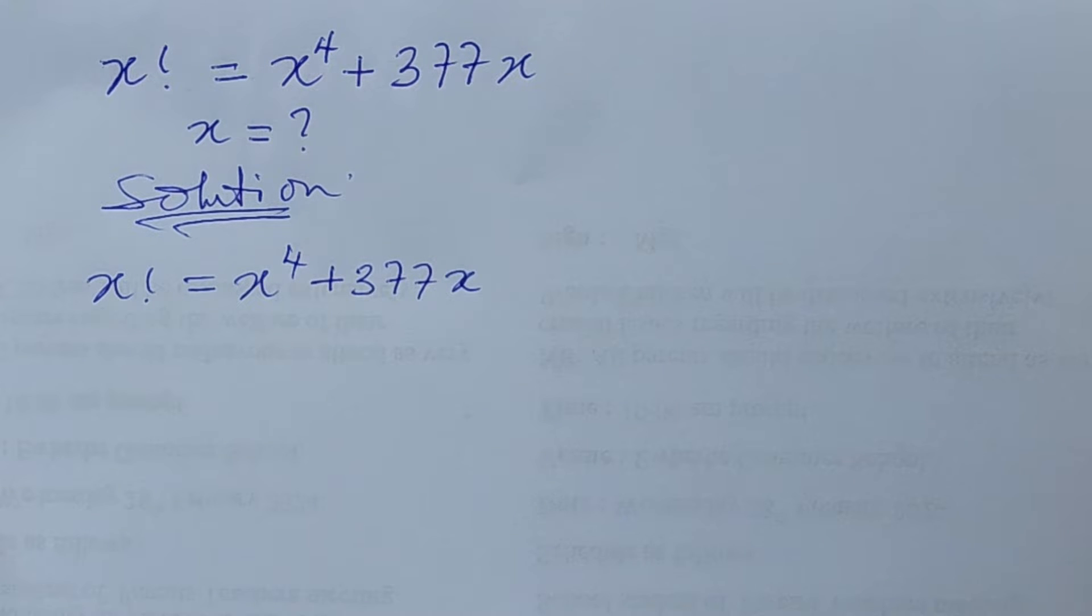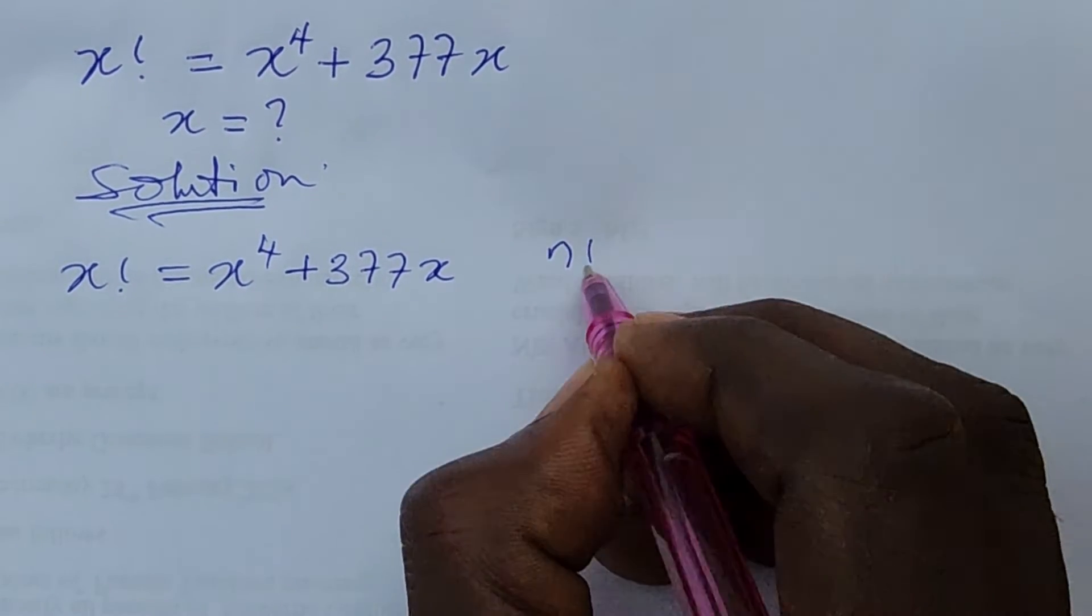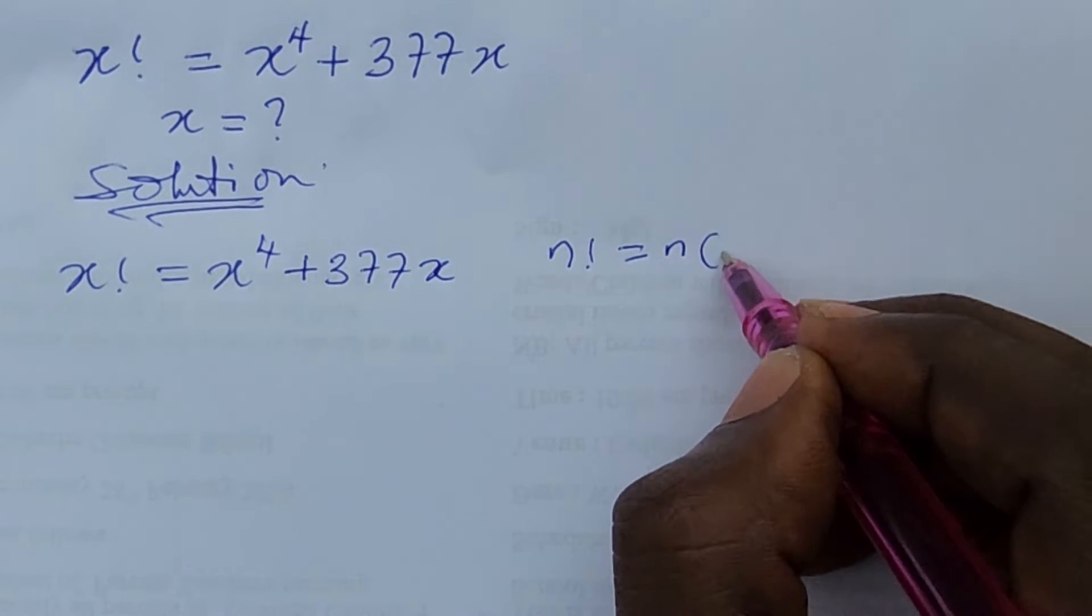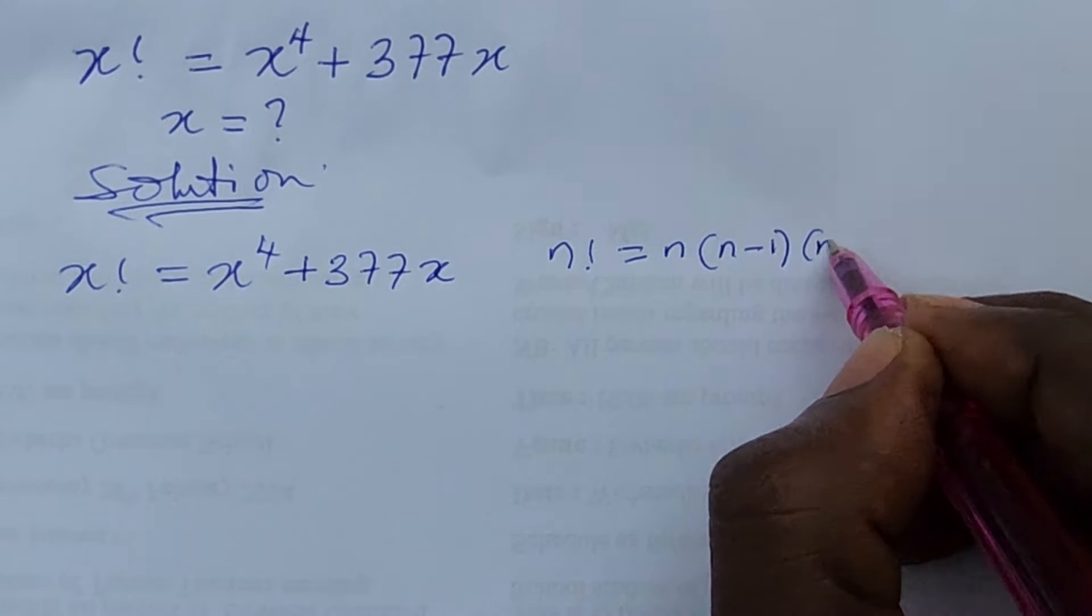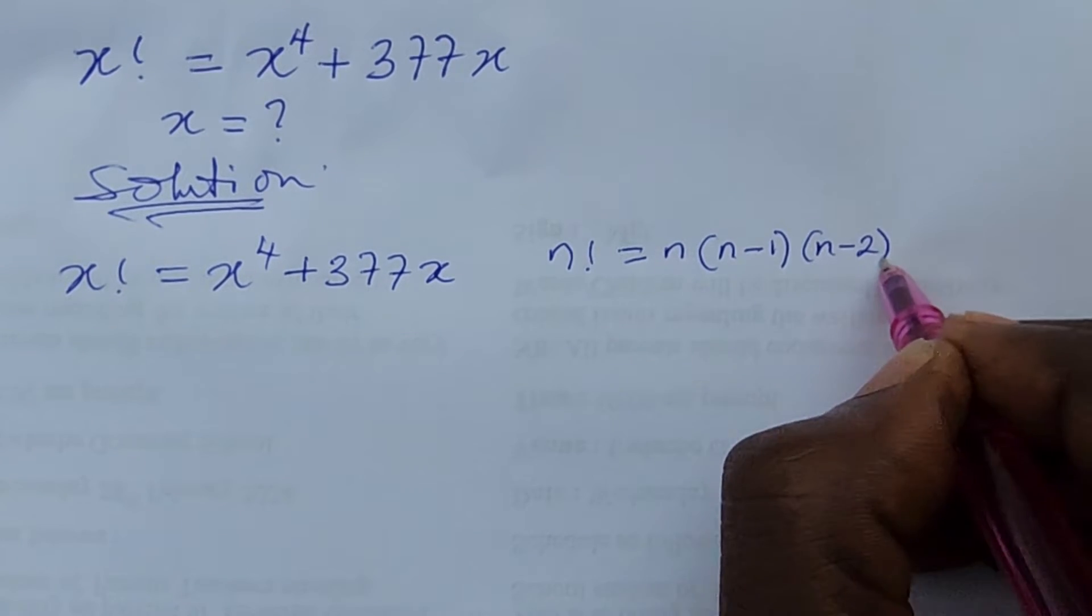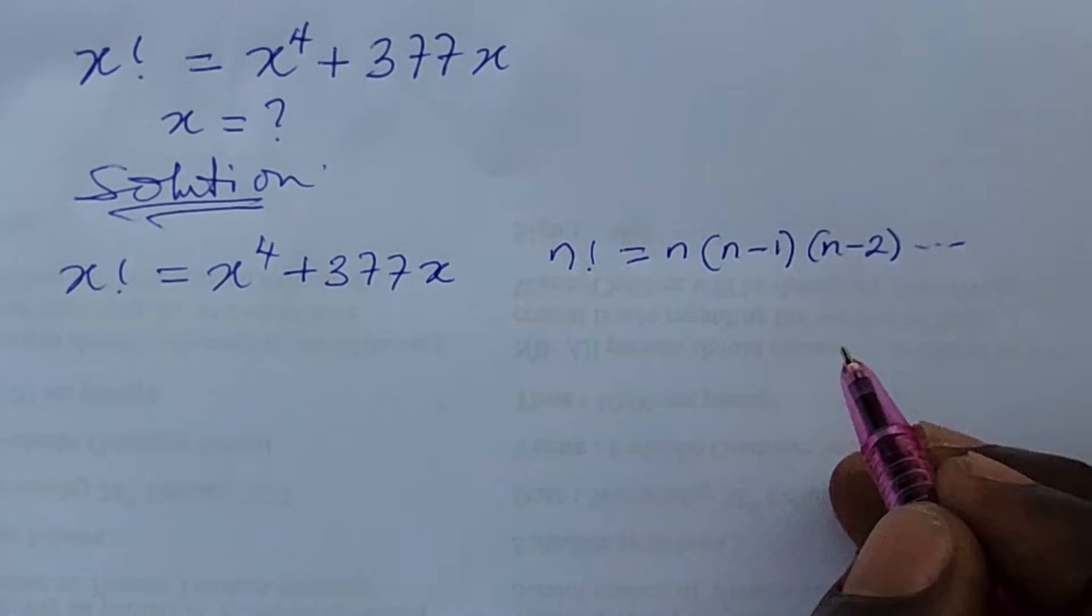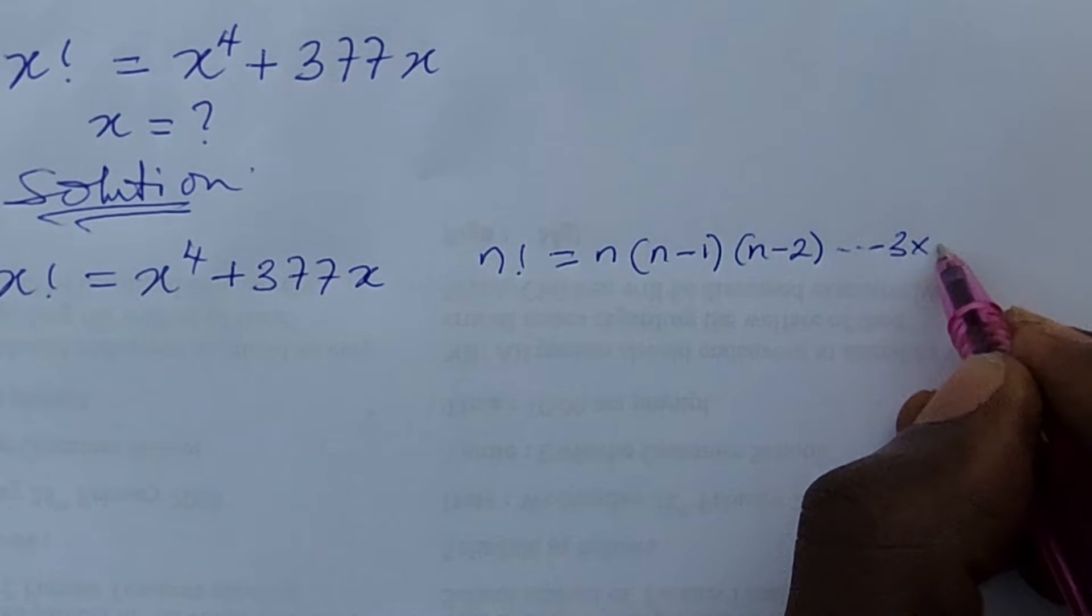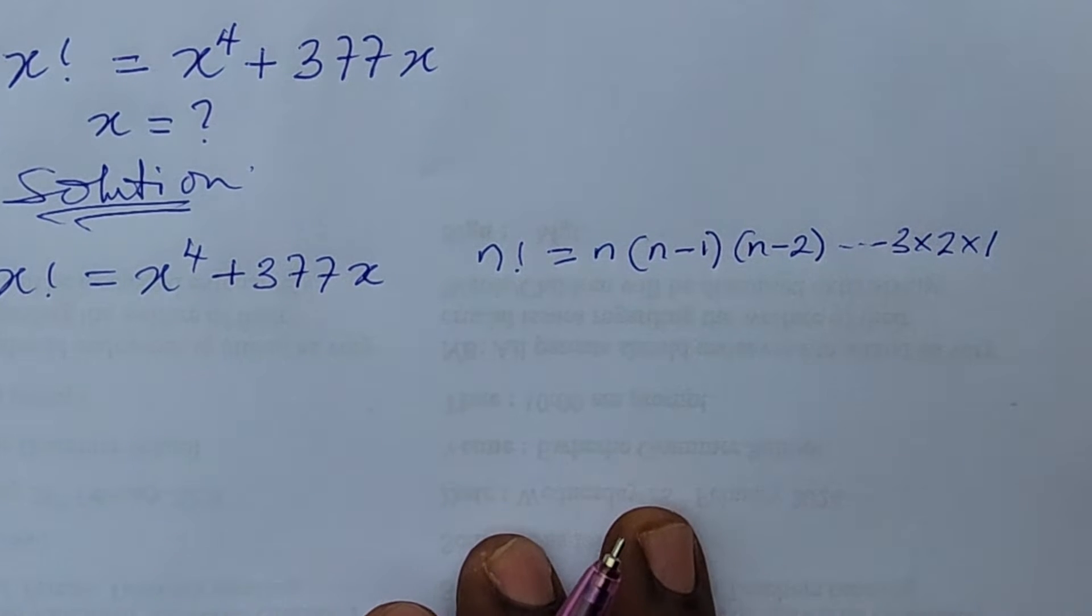Now we all know the definition of factorial right? For instance if we have your n factorial this is simply you have your n into your n minus 1 into your n minus 2. Okay so if we keep decreasing that until you get to let's say your 3 times 2 times 1 right? Okay so we all know this right?